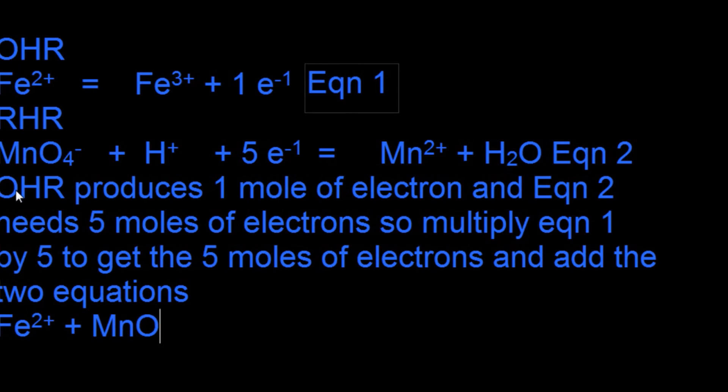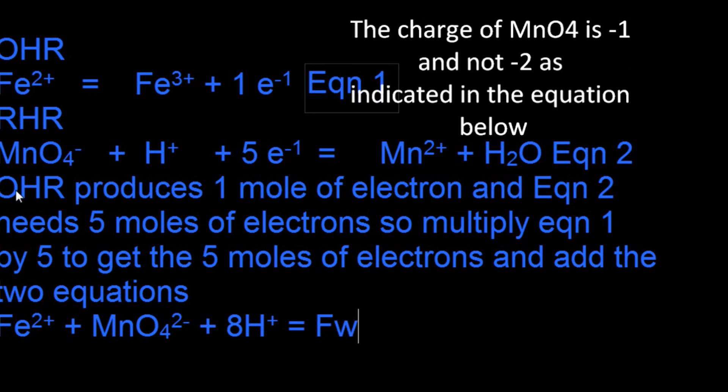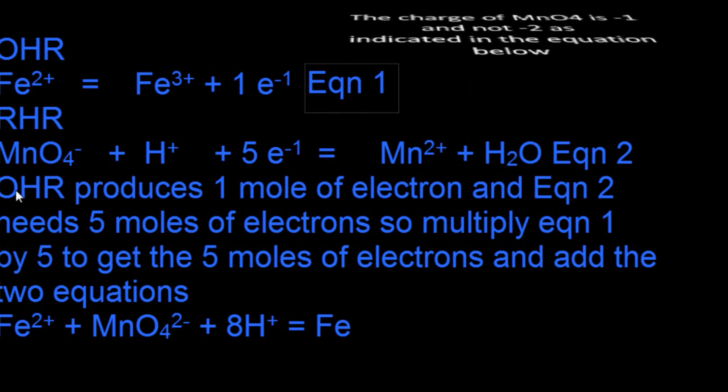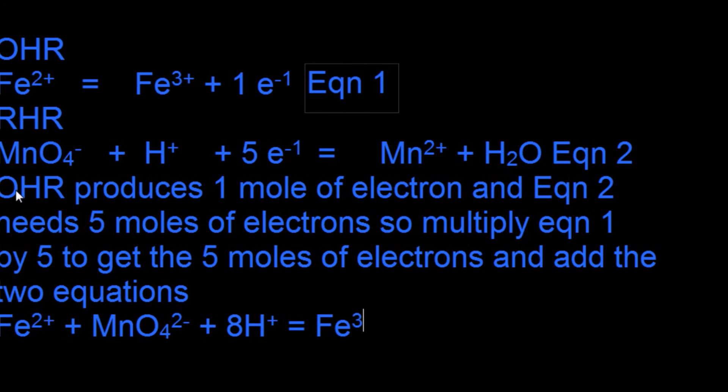Every time you're balancing an equation, all you're trying to do is make the number of electrons lost by the oxidation half reaction equal to the number of electrons gained by the reduction half reaction. So in this case, 5Fe2+ + MnO4- + 8H+ gives you 5Fe3+ + Mn2+ + 4H2O.